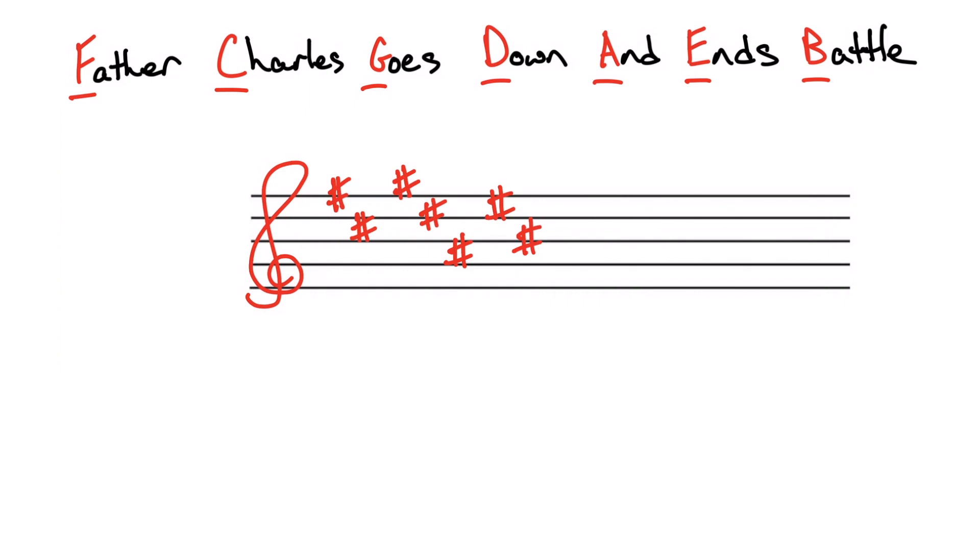So if I were to look at the key signature that uses all of these sharps, let's say we're using all seven, this represents the key of C sharp major. Now a cool little thing about the order of sharps is actually that all of these letters are separated by a fifth. So there's a fifth between F sharp and C sharp, a fifth between C sharp and G sharp, a fifth between G sharp and D sharp, and so on all the way down the line.